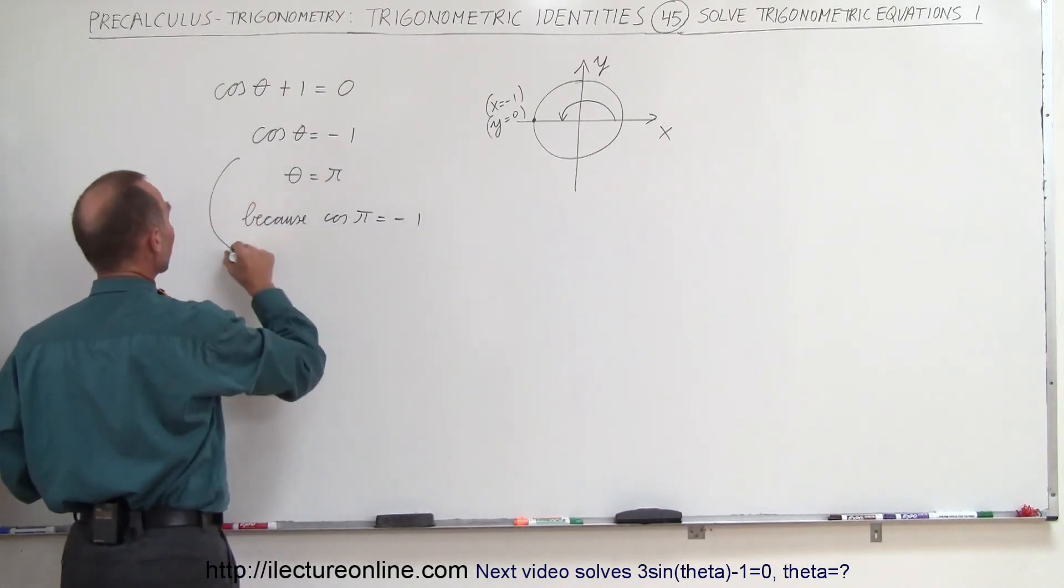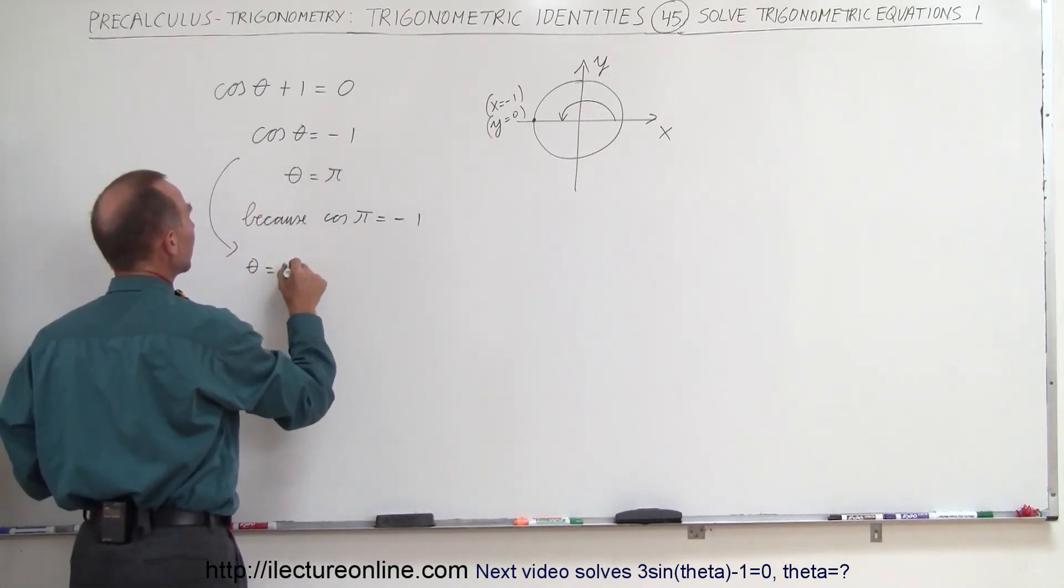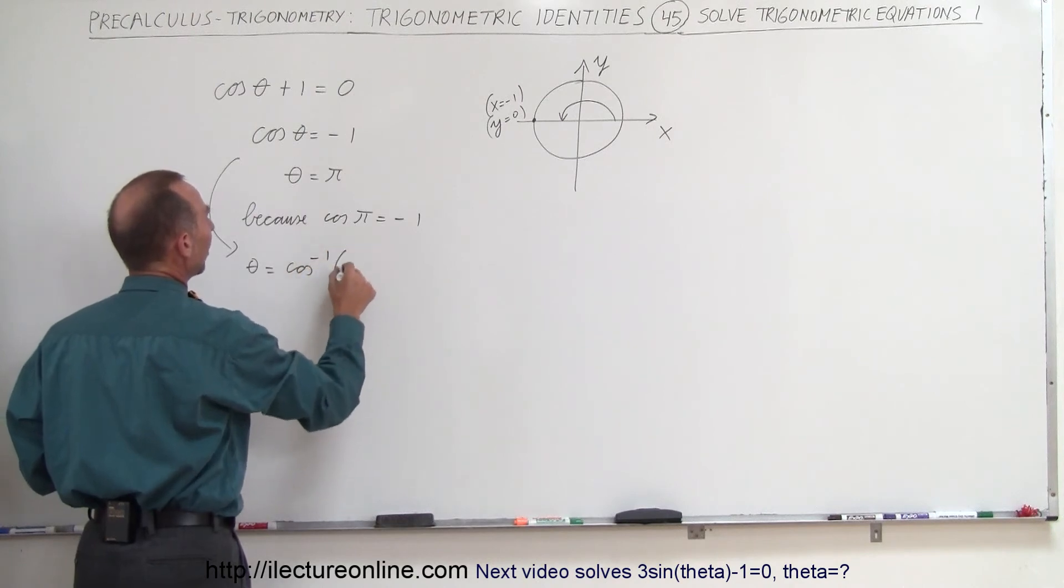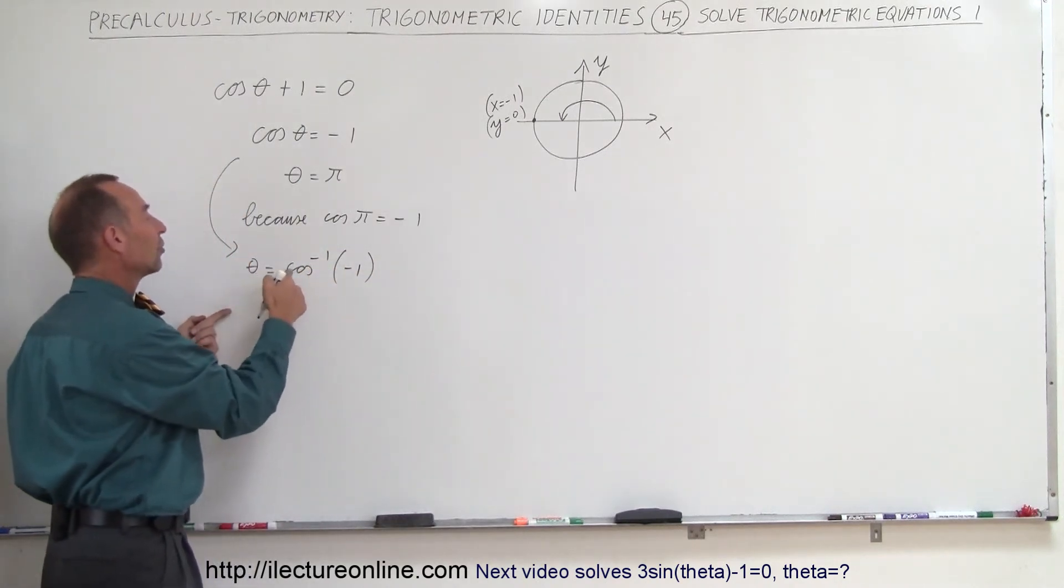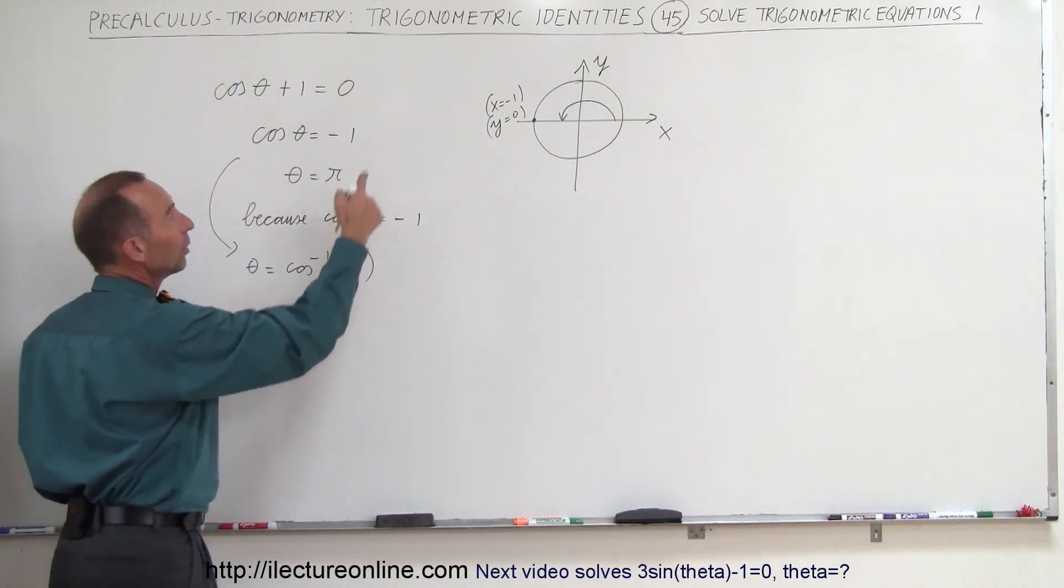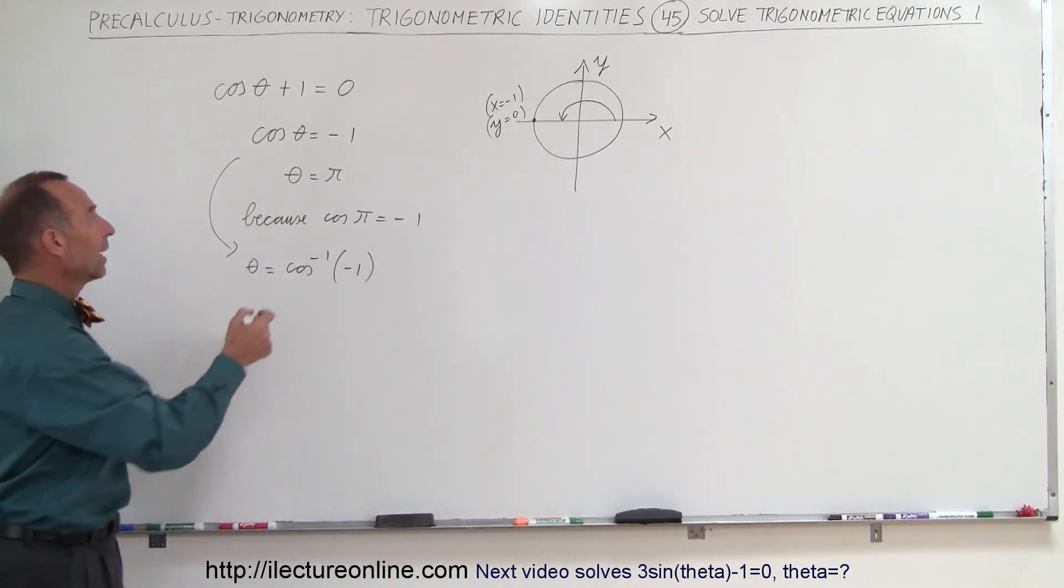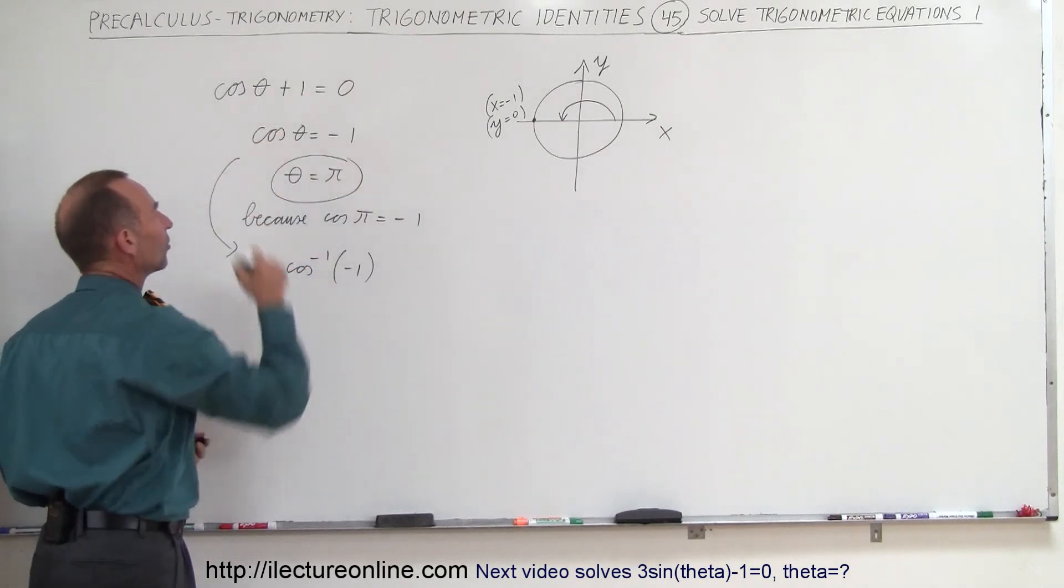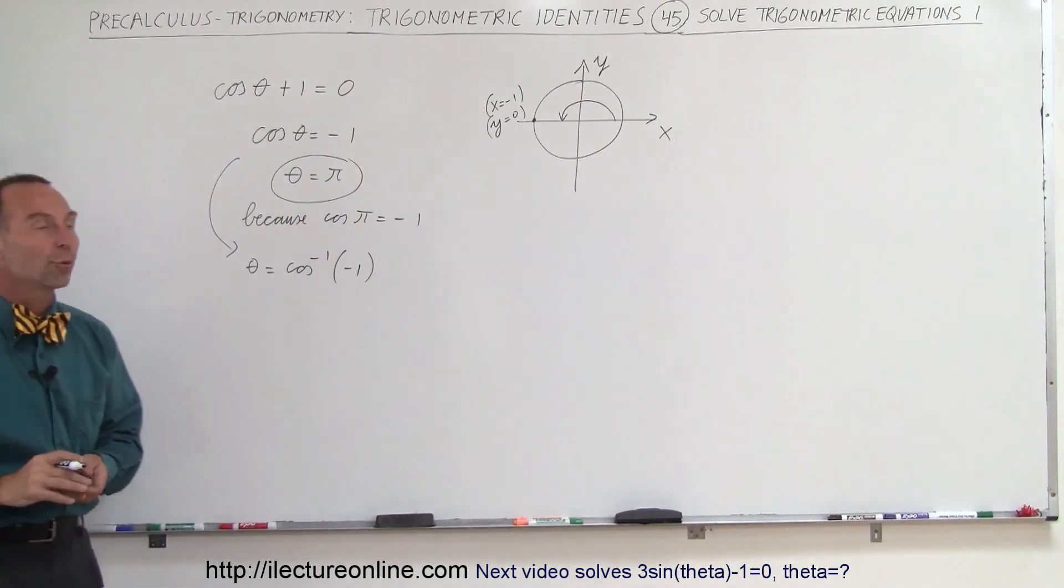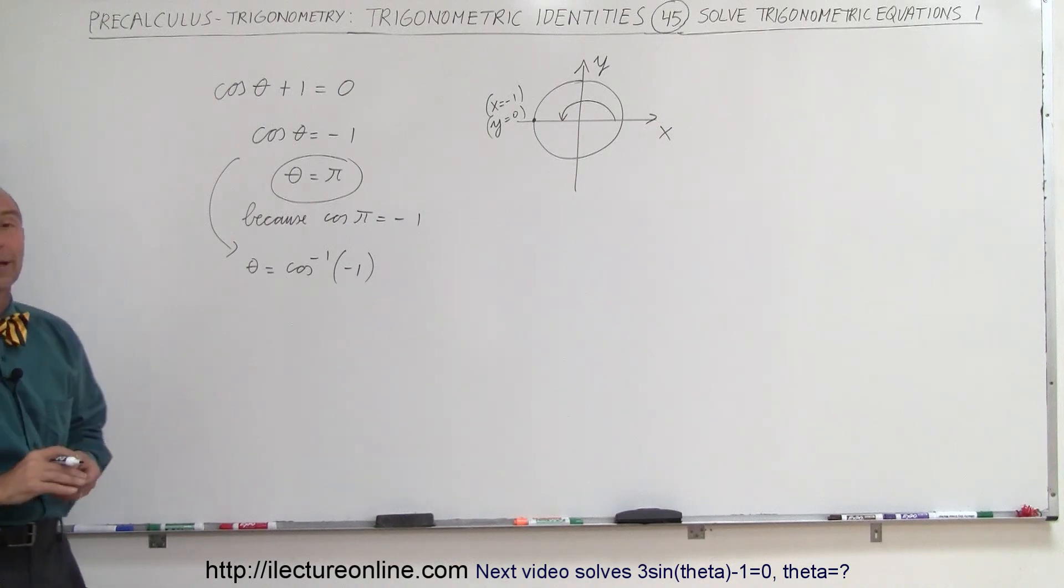Another way of doing the problem, we can say that theta is equal to the inverse cosine of negative 1, which means we're looking for the angle that makes the cosine of the angle equal to negative 1, which means the angle is 180 degrees or π. So the answer here, π would be the singular answer that we have for this particular equation. That's how we do that.